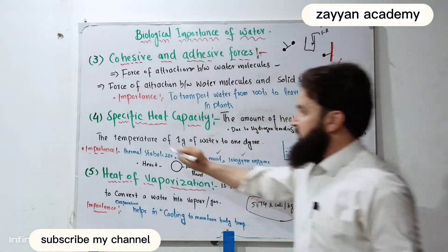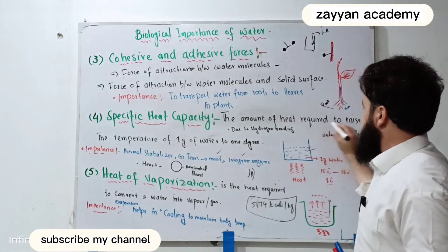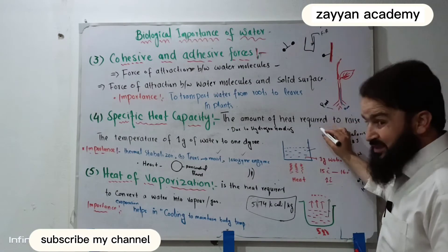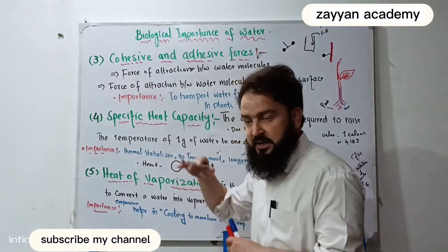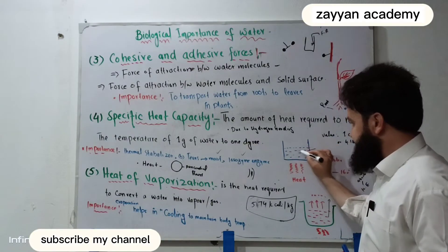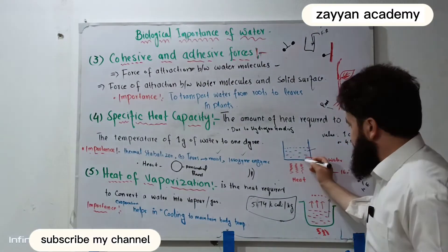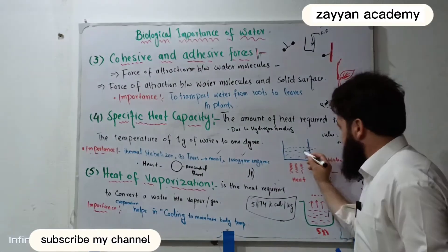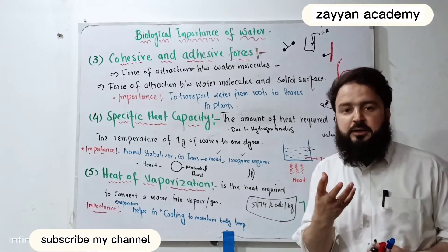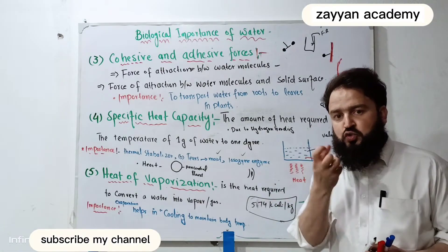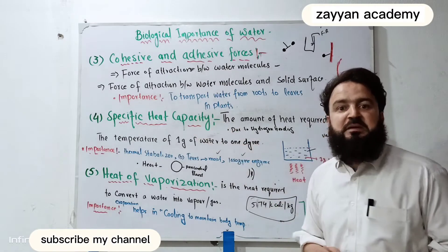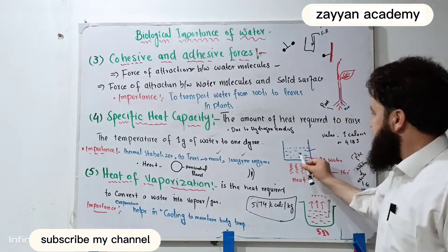This is important. For specific heat capacity, it is the amount of heat required to raise the temperature of 1 gram of water by 1 degree Celsius. For example, the temperature change from 15 to 16 degrees Celsius — when heat is absorbed, there is only a minor change. So this is specific heat capacity.